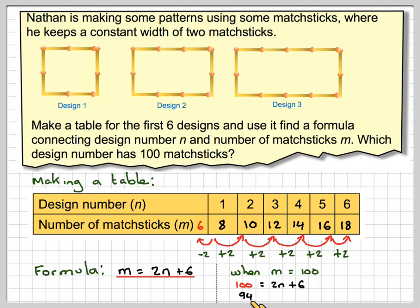So taking 6 from both sides, we're going to get 94 is equal to 2n. Dividing by 2, we're going to get that n is 47. Therefore, design number 47 has 100 matchsticks.